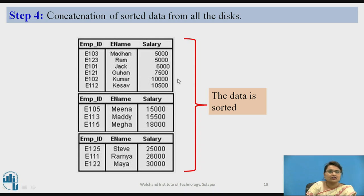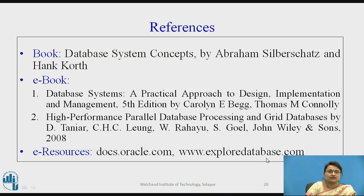Finally, our table is now sorted properly. We merge D0, D1, and D2 contents and the complete data is sorted. This concludes the parallel external sort merge technique.